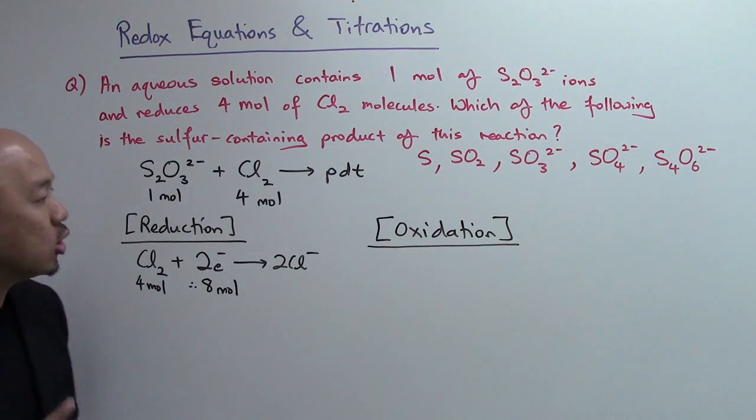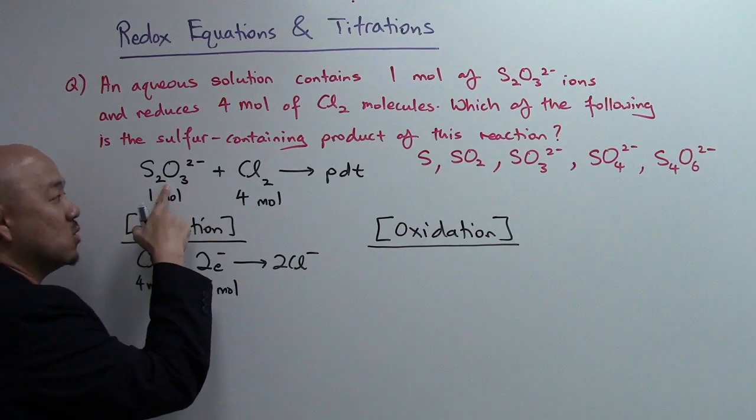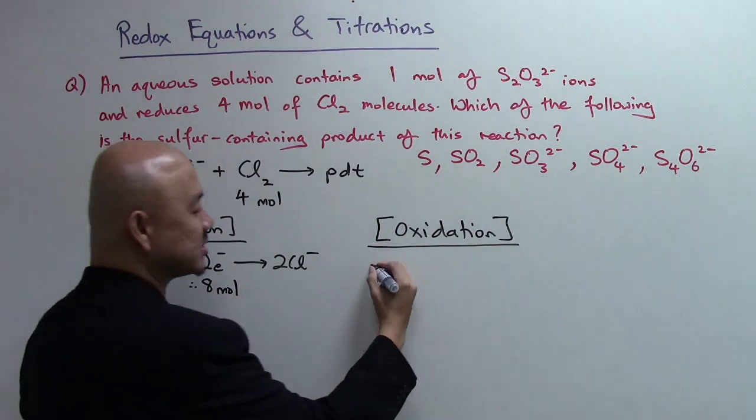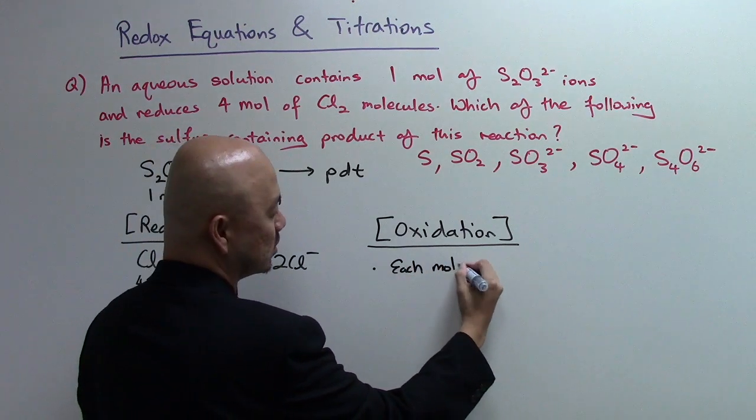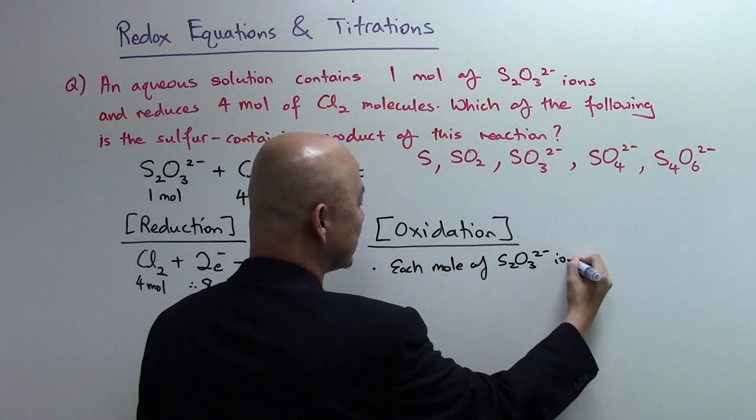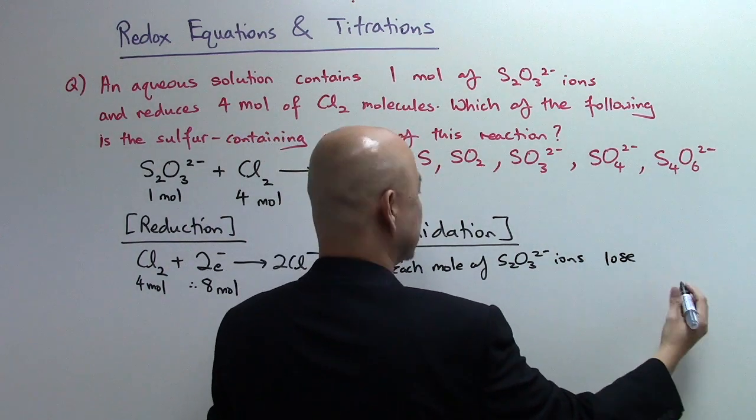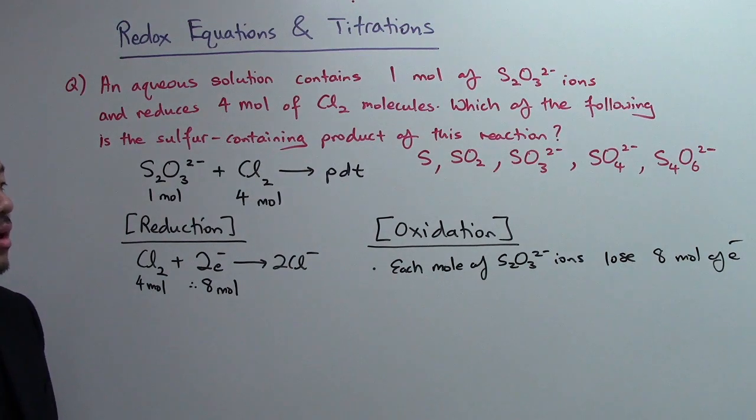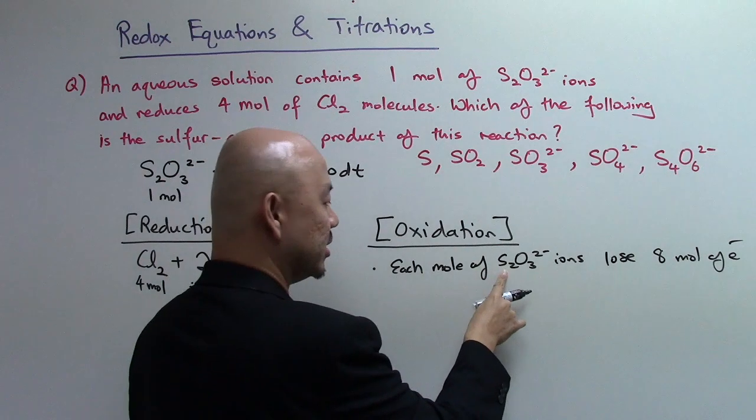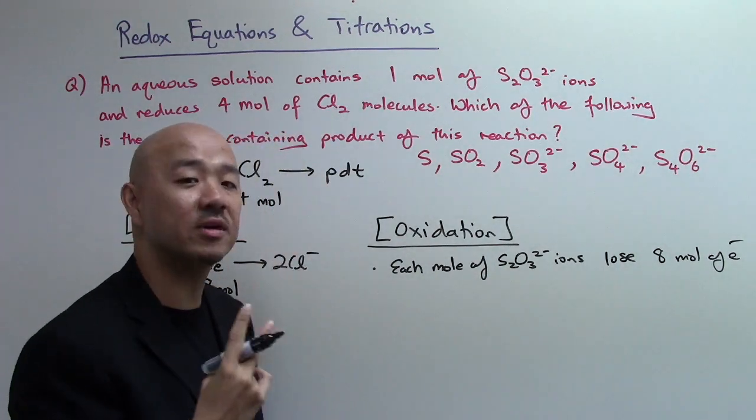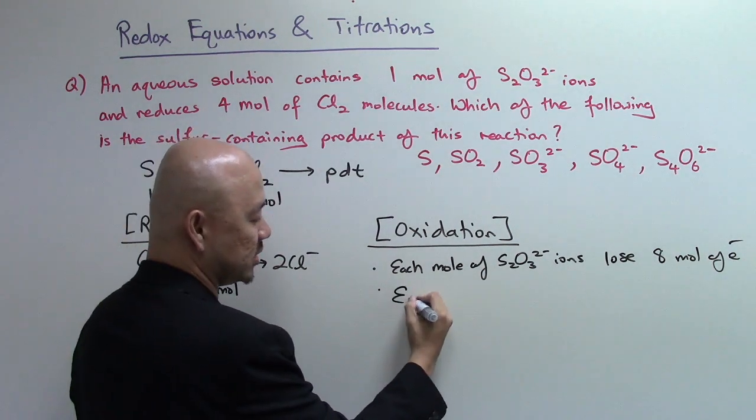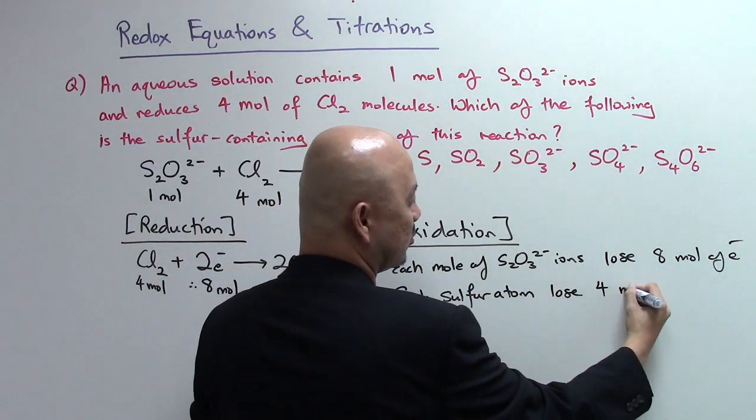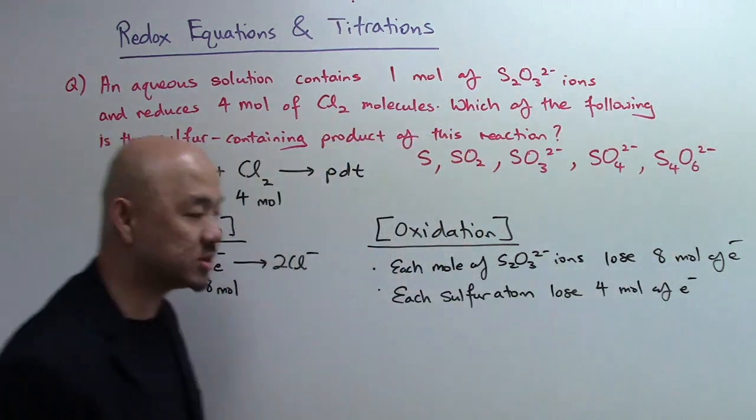This is the oxidation half. We understand that every time when one mole of S2O32- reacts with four moles of chlorine, eight moles of electrons are transferred. It's as good as saying each mole of S2O32- will lose eight moles of electrons. If you look at it, each mole of S2O32- has actually two sulfur atoms involved. So each sulfur atom must have lost four moles of electrons in this redox reaction.